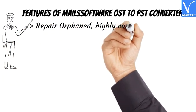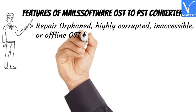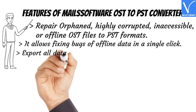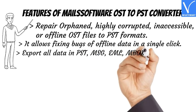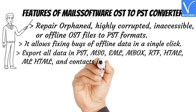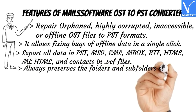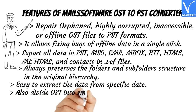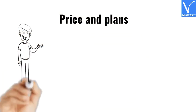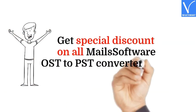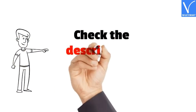Features of Mail Software OST to PST Converter: Repair orphaned, highly corrupted, inaccessible, or offline OST files to PST formats. It allows fixing bugs of offline data in a single click. Export all data in PST, MSG, EML, MBOX, RTF, HTML, MHTML, and contacts in .vcf files. Always preserves the folders and subfolders structure in the original hierarchy. Easy to extract data from a specific date. Also divide OST into small PST files using the split option. The price and plans are exhibiting on the screen. Our viewers get a special discount on all Mail Software OST to PST Converter licenses. Check the description for the product and discount links.